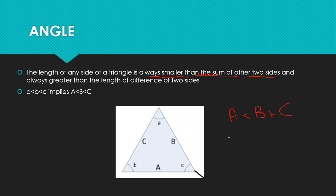Similarly, b will always be smaller than the sum of a plus c, and c will always be smaller than the sum of a plus b. So any side of a triangle will always be smaller than the sum of the other two sides.